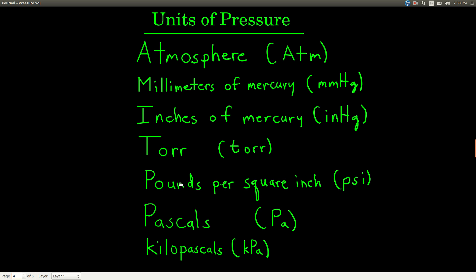There are several units of pressure. Atmospheres, we use a lot in chemistry, abbreviation ATM. Millimeters of mercury, you just saw the mercury barometer, that's where that one came from, mmHg. Inches of mercury, same thing. The mercury barometer measures the height of the column in inches rather than millimeters.